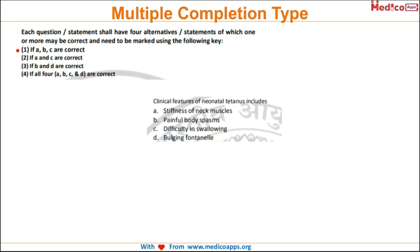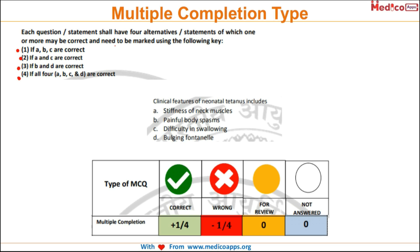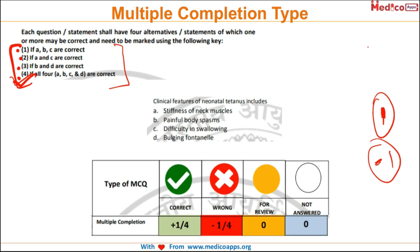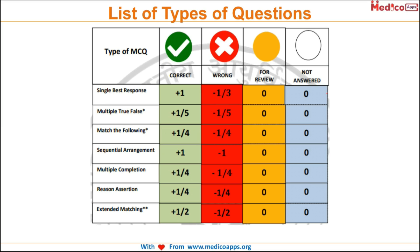The multiple completion type question appears relatively simpler — similar to PGI questions where multiple correct answers are possible, but based on the example it seems only one of the options (1, 2, 3, or 4) will be the answer. I believe each question will be worth 1 mark with minus 1 as the negative, making it 100% negative again. Looking at the overview table: single correct answer is the only type with minus 33% negative; all other types carry 100% negative marks.